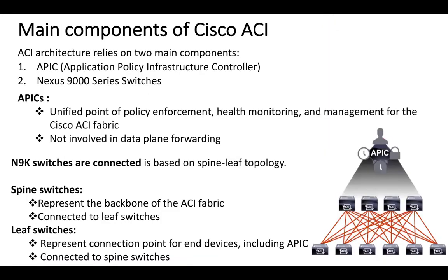Now let's discuss the components of ACI. There are two components in Cisco ACI: APIC and Nexus switches. APIC stands for Application Policy Infrastructure Controller — it is a policy controller for all configuration, management-related tasks, and health monitoring. APIC does not participate in data plane forwarding. We use Nexus 9K switches connected in a spine-leaf topology. Spine switches act as the backbone of the ACI fabric; each leaf is connected to spine. Leaf switches are where all endpoints connect, including APIC. There is no connection between spine-to-spine or leaf-to-leaf.